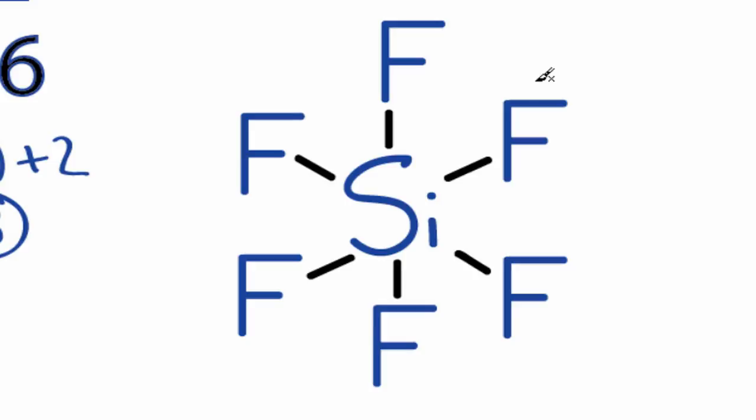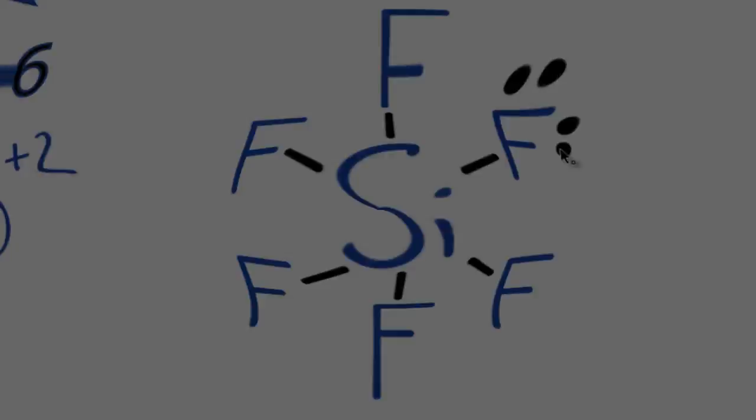Then we'll go around the outside and complete the octets on the fluorine atoms until we've used all 48 valence electrons. So we have 12, 14, 16, and 48 total valence electrons.